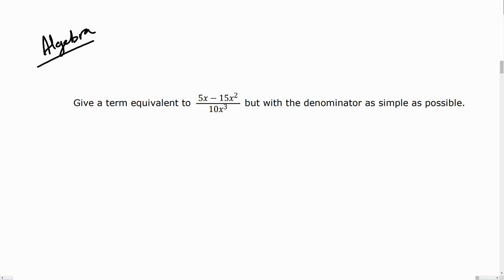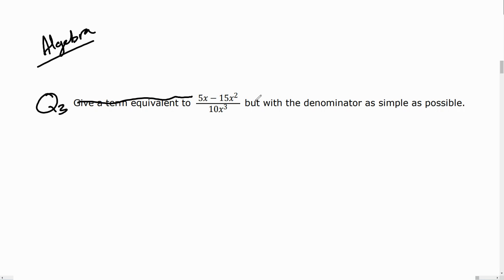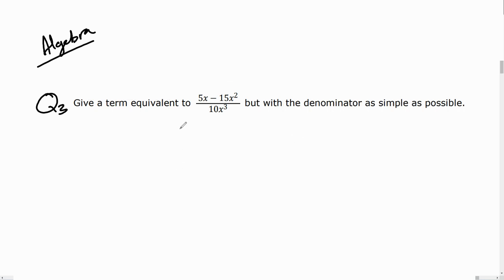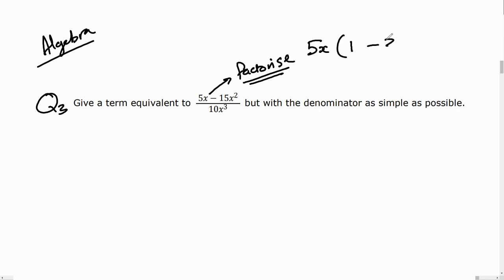Question three: give a term equivalent to this term but with the denominator as simple as possible — essentially, simplify the expression. The first thing I can see is that I can factorize the numerator by taking out a common factor of 5x, leaving 5x times (1 − 3x), since 5x times 1 is 5x and 5x times 3x is 15x squared.